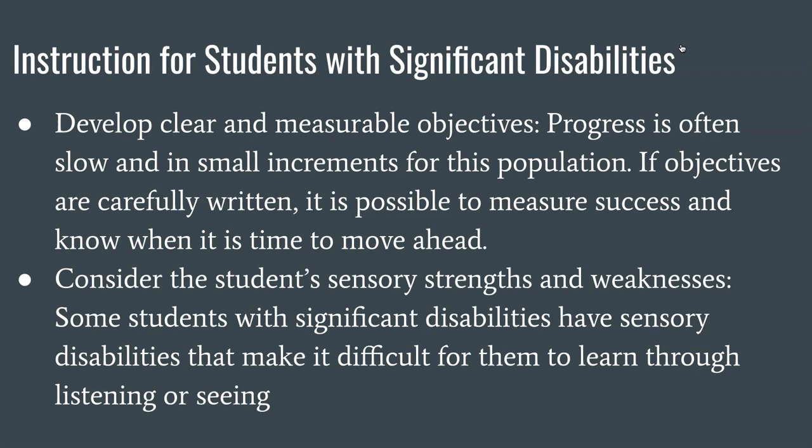Things can be slow, but you can have moments of real clarity for these kids — and it can be exciting when they make these leaps. Really planning ahead of time what you're going to do, how you're going to do it, and what goals you're trying to meet is going to make a big difference. Consider the student's sensory strengths and weaknesses — some students with significant disabilities have sensory disabilities that make it difficult to learn through listening, seeing, or other means, so really think about the best way to teach these kids.